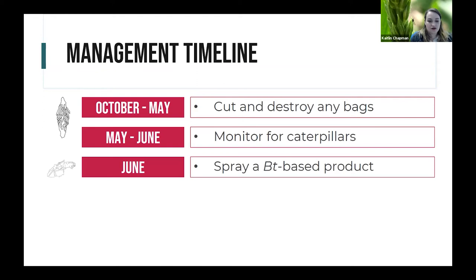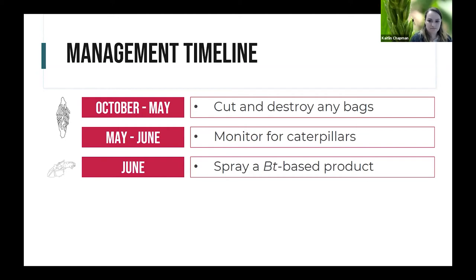In June, if you've confirmed a bagworm infestation, we strongly recommend spraying a BT-based product. BT is Bacillus thuringiensis, a bacterium that produces a toxin and kills specific insects — in this case, caterpillars. The caterpillars have a certain gut pH that activates BT, which is why it's great for non-target organisms — you won't negatively affect pollinators or natural enemies like wasps, parasitoids, and predators. It's most effective against young larvae, which must consume the BT on the plant itself, so coverage and timing are both critical.